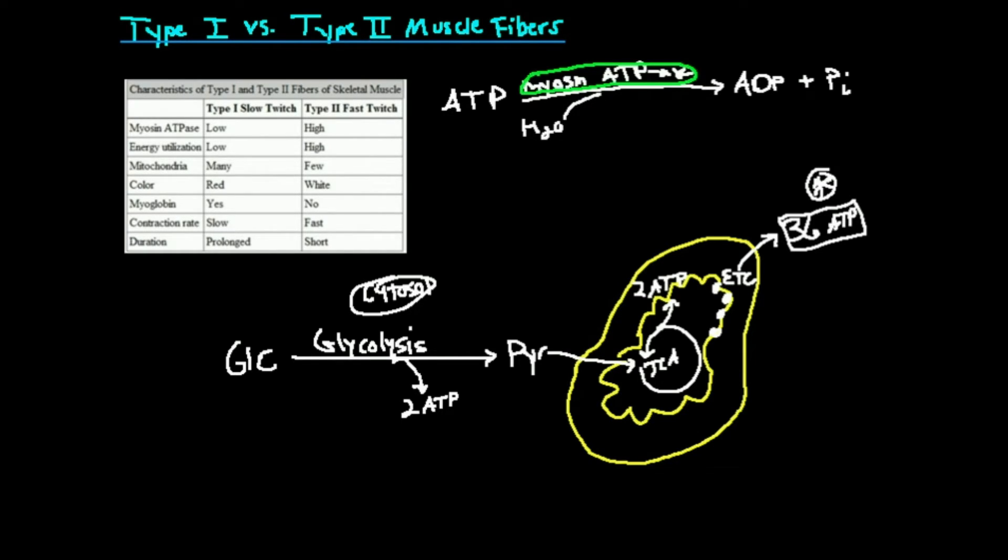Now let's look at the contraction rate. And this is what gives this the name. Type 1 or slow twitch. Slow twitch, the contraction rate of type 1 is slow. Type 2 are fast twitch muscle fibers, so their contraction rate is fast. Because type 2 muscle fibers have more myosin, they're able to contract faster. Because type 1 fibers have less myosin, they contract more slowly.